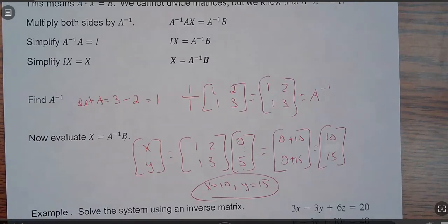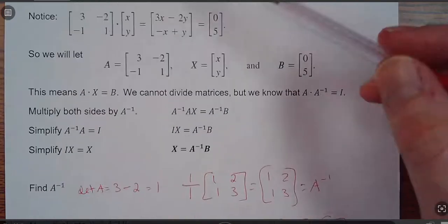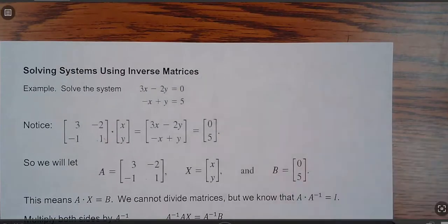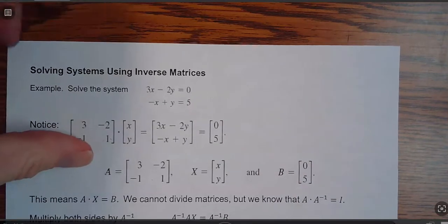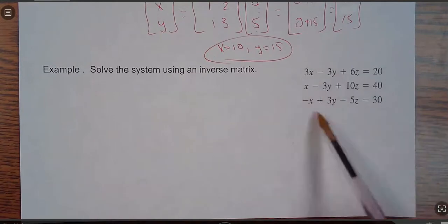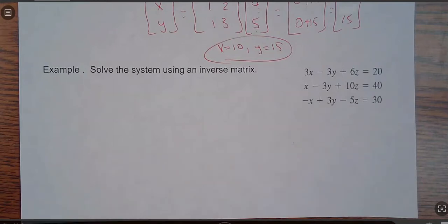And you might be saying, well, that doesn't seem like that saved a lot of time. Well, with 2 by 2s, this was a system of two equations with two unknowns. Sometimes it's going to be faster. Sometimes it's not going to be faster. But you get down to like 3 by 3s and 4 by 4s, it can save a lot of time. If you remember from Algebra 2 solving this guy, it takes a long time, sometimes half a sheet of paper just to solve it all.